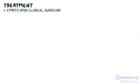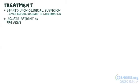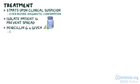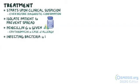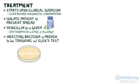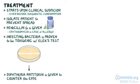Treatment for diphtheria starts right upon clinical suspicion, even before diagnostic confirmation. It starts with isolating the patient to prevent further spread, and then penicillin G is given, or erythromycin in case of allergy. Then, if the infected bacteria is proven to be toxigenic with Elek's test, diphtheria antitoxin is given to counter the effects of the bacterial toxin.